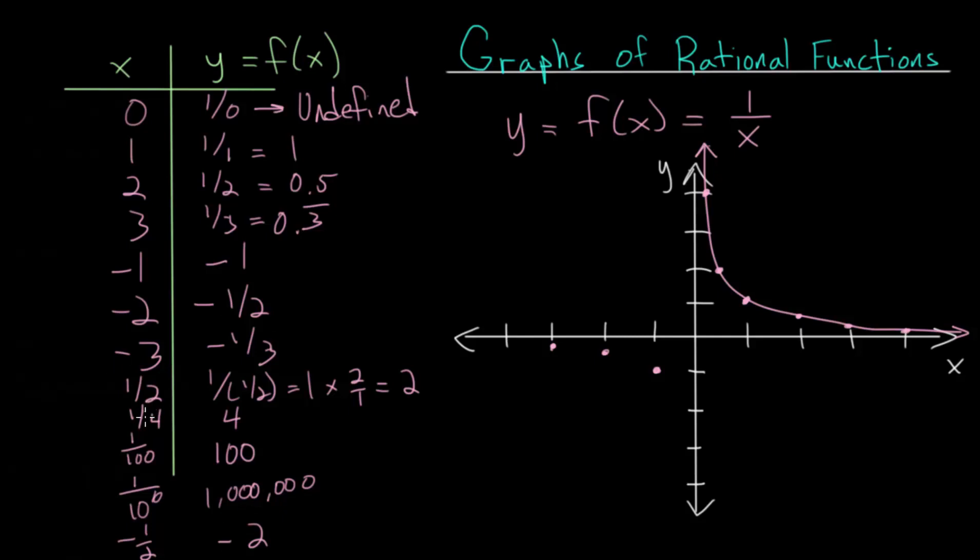For every one of these values, when we put in the opposite of it, then the y value will also be the opposite of that. So at minus 1 fourth, it'll be negative 4. And at minus 1 hundredth, it'll be negative 100, and so on.